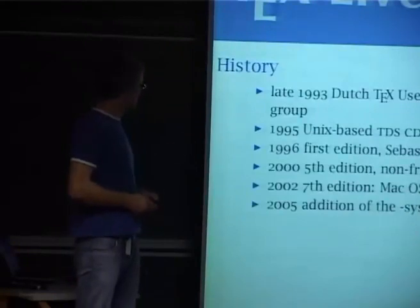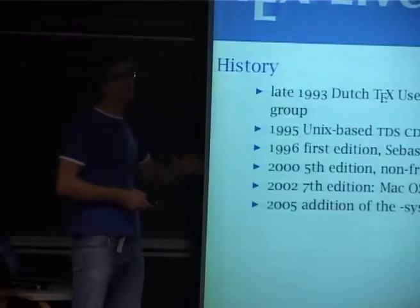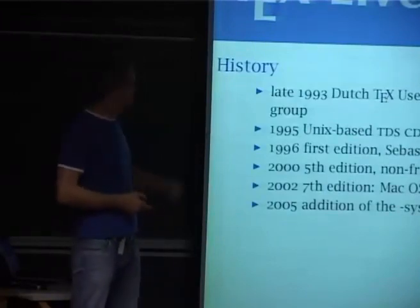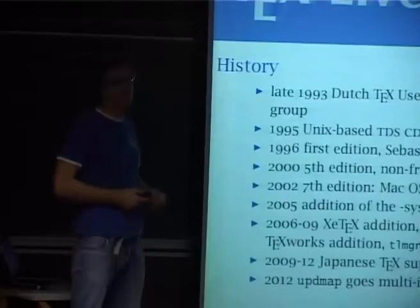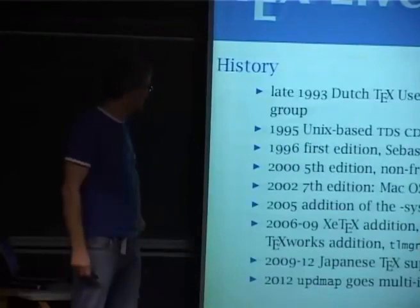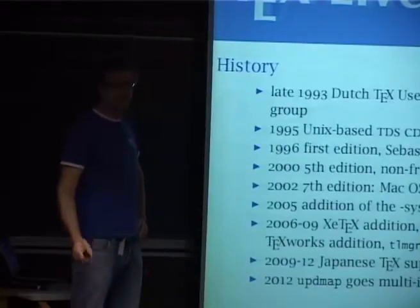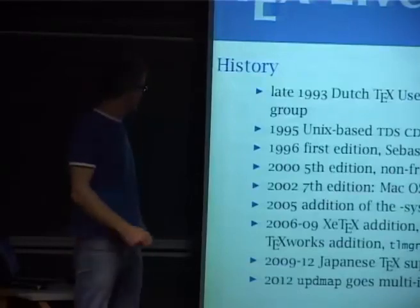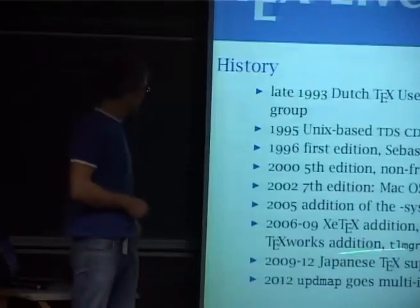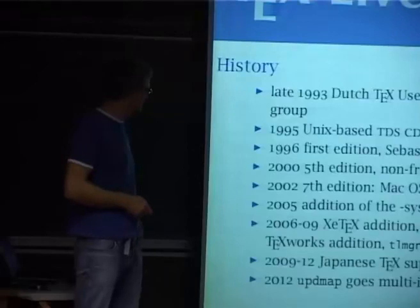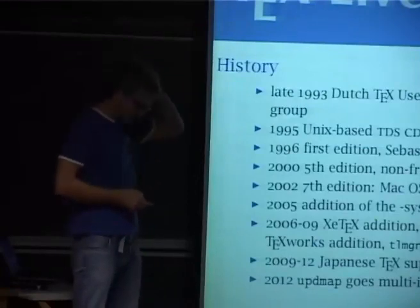The next big steps: around 2000, all non-free software was removed. In 2002, macOS support was added. From 2006 to 2009, Karl Berry took over from Robin and saw the addition of XeTeX, now very common especially for multilingual typesetting. teTeX stopped being developed and it took about 10 years to phase it out. Since 2007, we have the TeX Live Manager. In recent years, coinciding with my move to Japan, Japanese TeX support was introduced with LuaTeX — there's a different engine extension for the very complicated Japanese typesetting technique. Last year, another big project was to rewrite the update method.